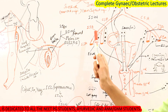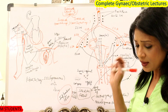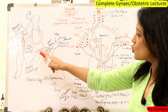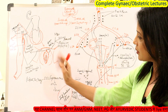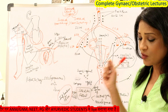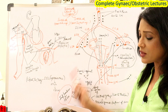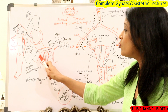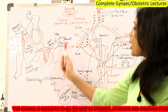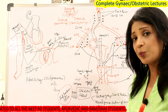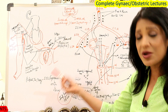That is all about the lymphatic drainage of internal and external genitalia. One important point about vulval cancer — if you divide the vulva from the midline, you can perform unilateral dissection. This is very important for those learning about cancer spread and those dealing with surgeries of the vulva.